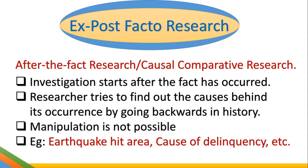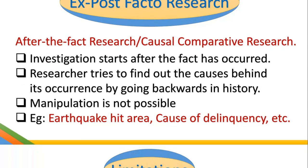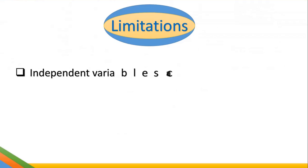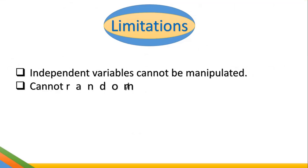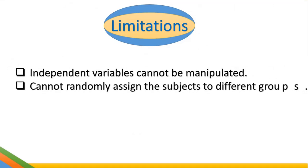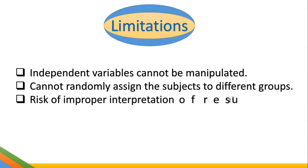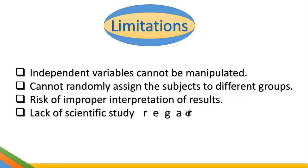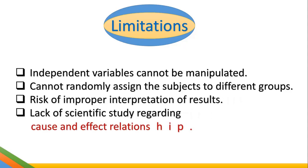Because the event has naturally occurred, manipulation is not possible. Now, having explained how ex post facto research is conducted, let's look at some limitations. First, independent variables cannot be manipulated, because everything is recorded as it is since the event occurred naturally.